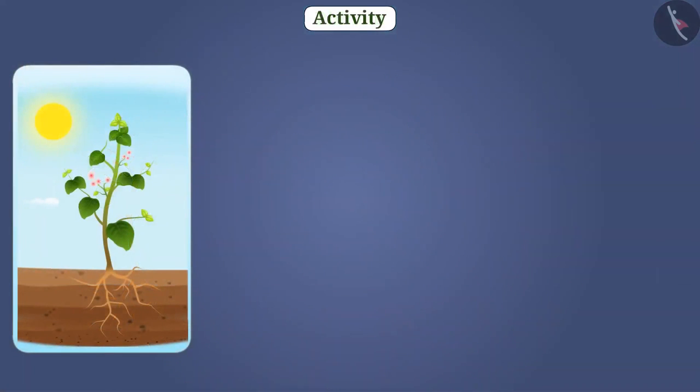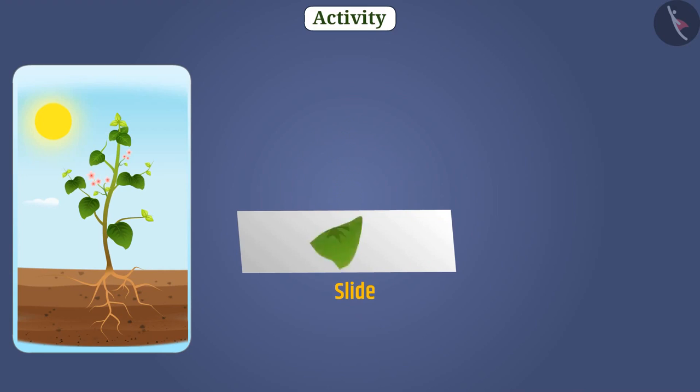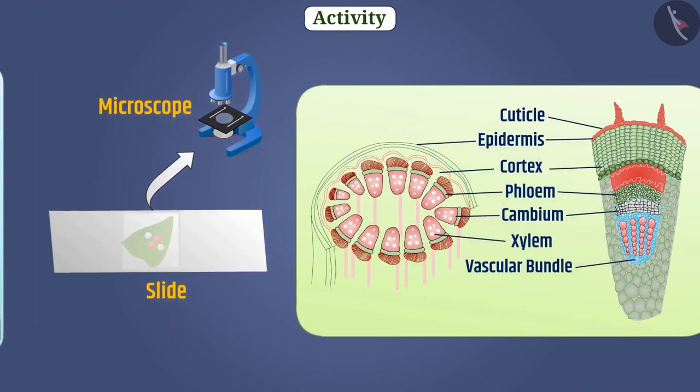Let us now look at different plant cells with the help of an activity. For this, we will take a stem of any plant and cut a very thin section of it. Now, we will keep this section on a slide and pour some drops of safranin and glycerin on it. After this, we will cover this section with a cover slip. On examining the section with the help of a microscope, this type of figure will be observed.